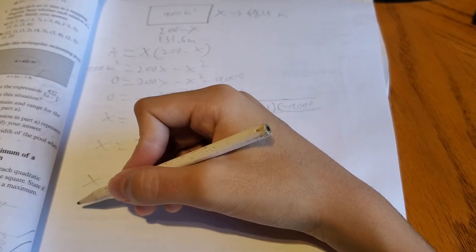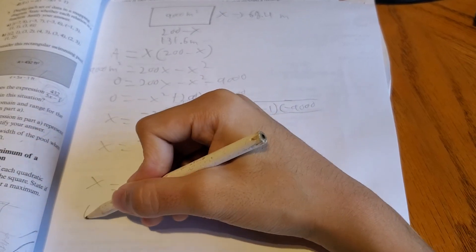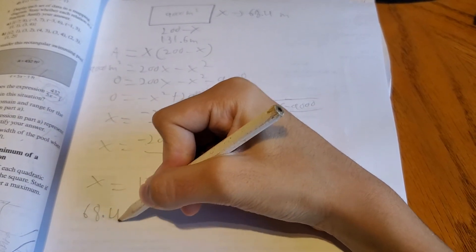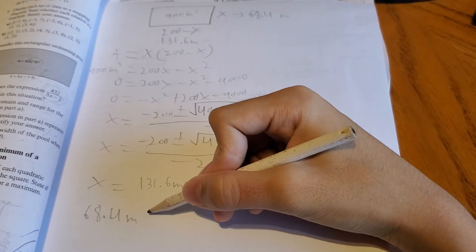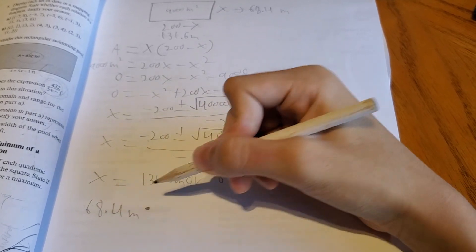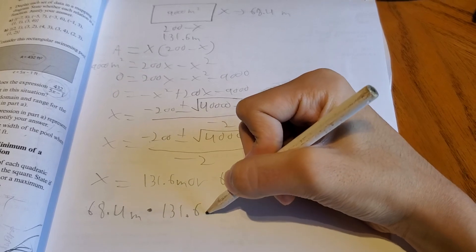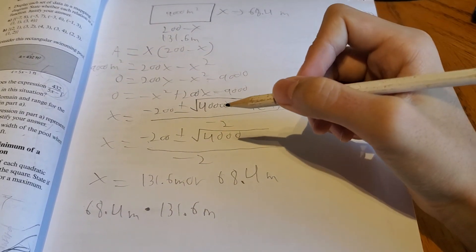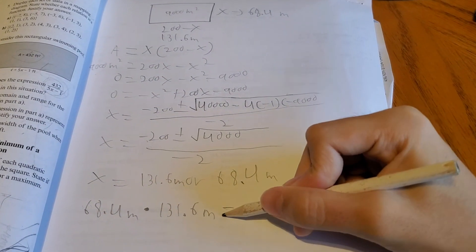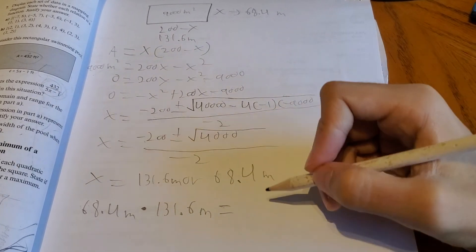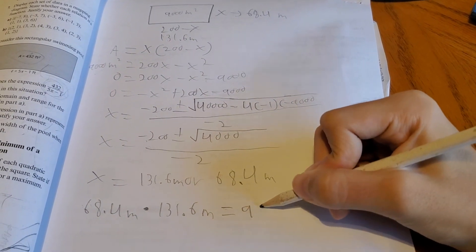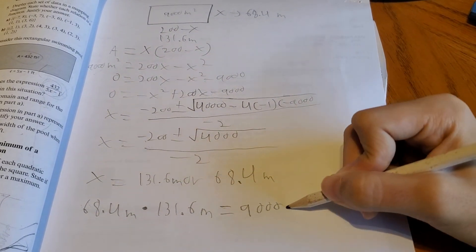And you can use your calculator. 68.4 meters multiplied by 131.6 meters. And if you do the calculation, it will equal to around 9,000 meters squared.